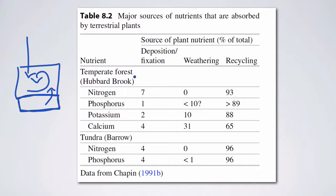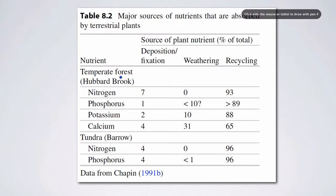So here, the authors compare two systems. The first is Hubbard Brook, which again, is a deciduous, primarily deciduous forest in northeastern US. Deposition and fixation for nitrogen is only 7% of all the nitrogen that plants use, and 93% comes from recycling.